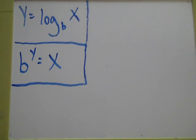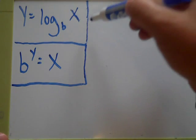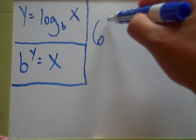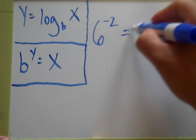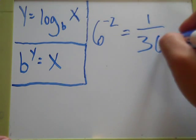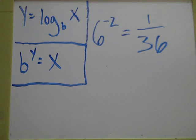What if you have something that looks like this right here? 6 to the negative 2 power equals 1 over 36. If you have a problem that looks anything like that, then I'm going to show you how to knock that out and solve that.